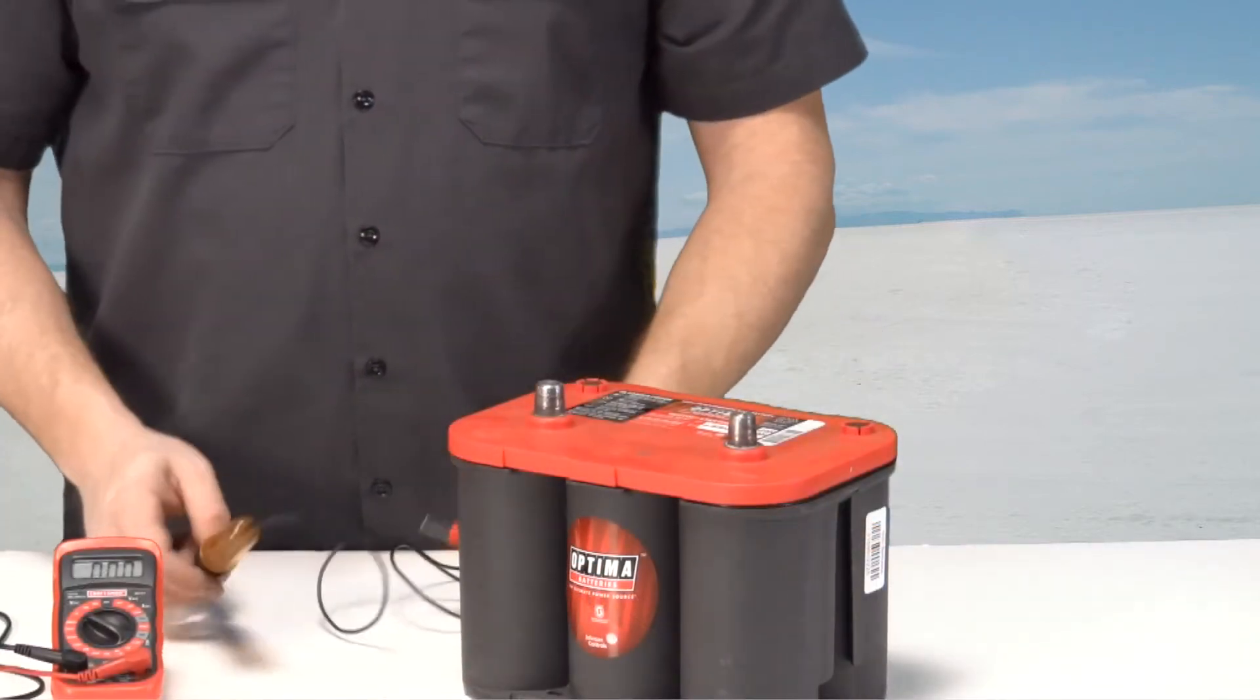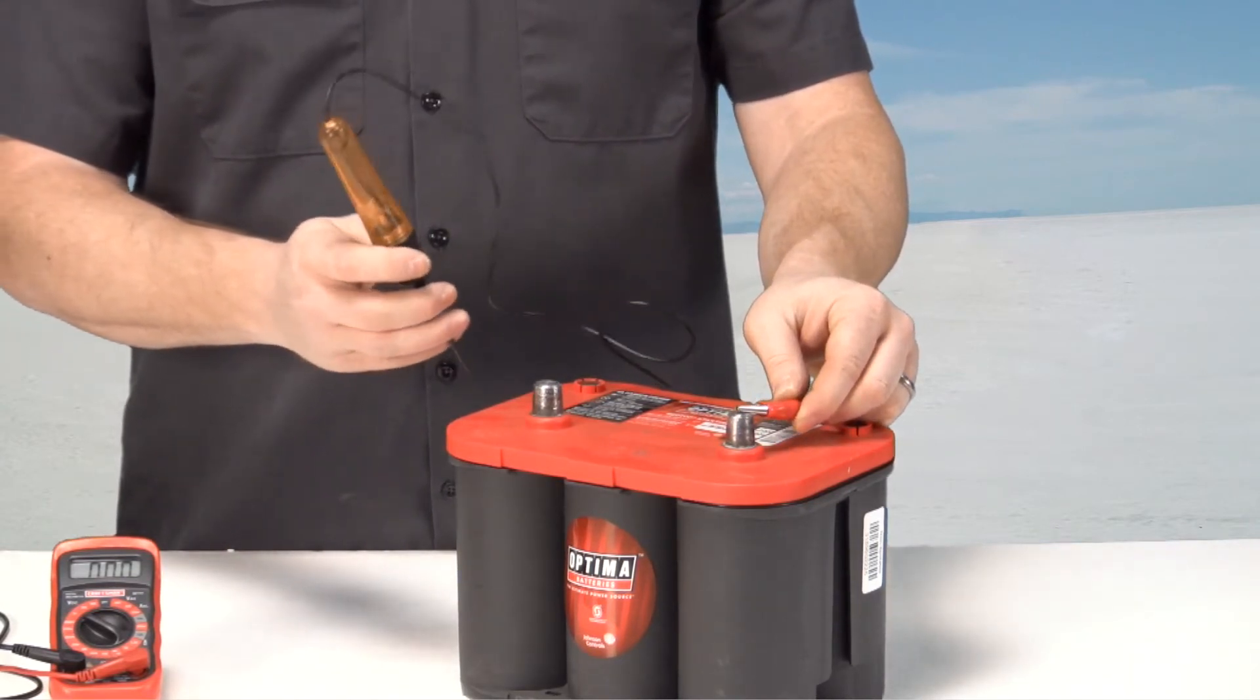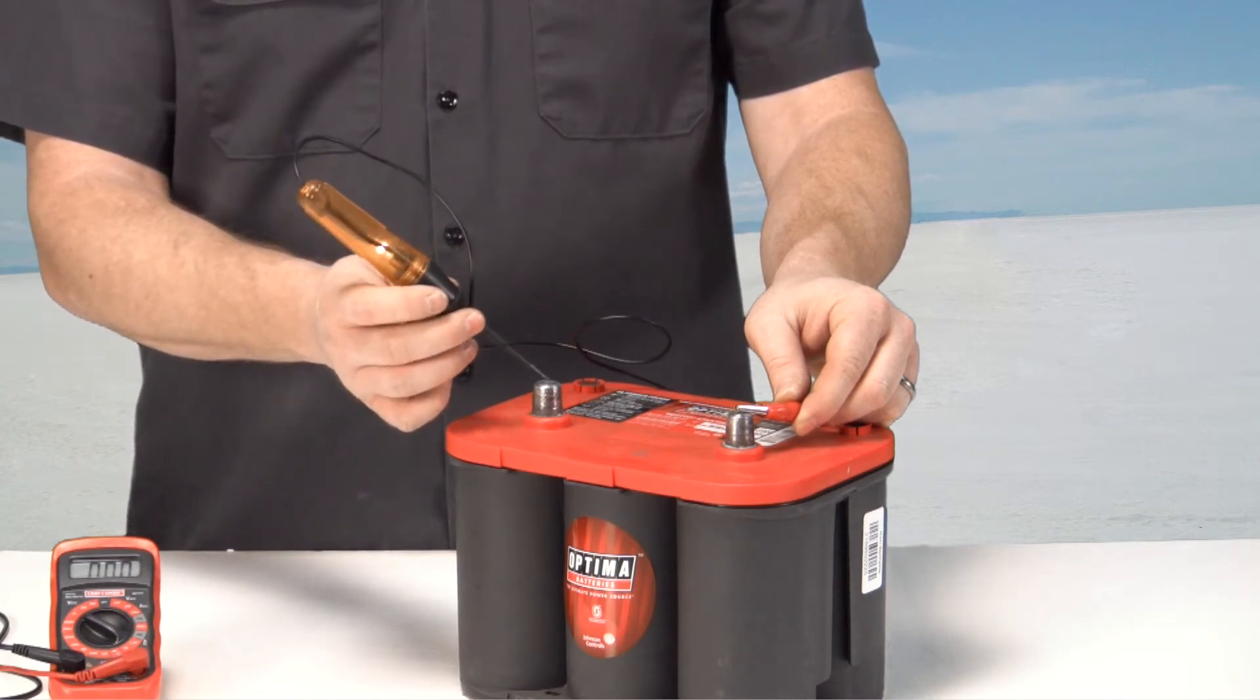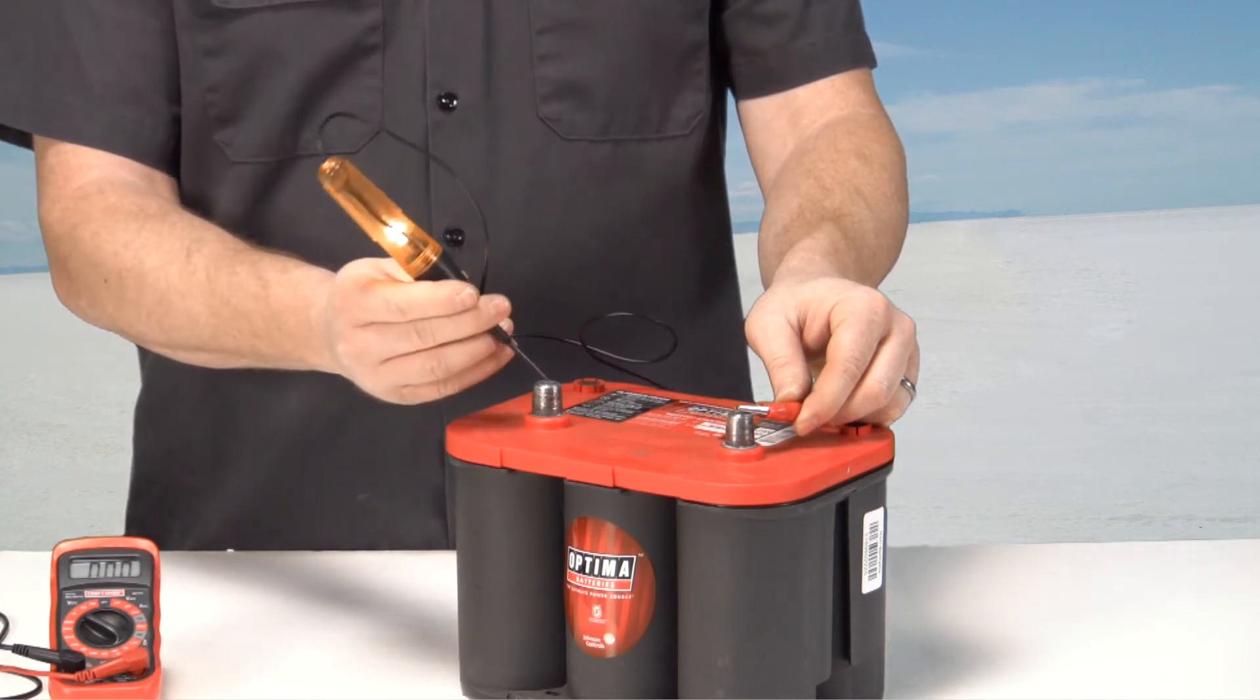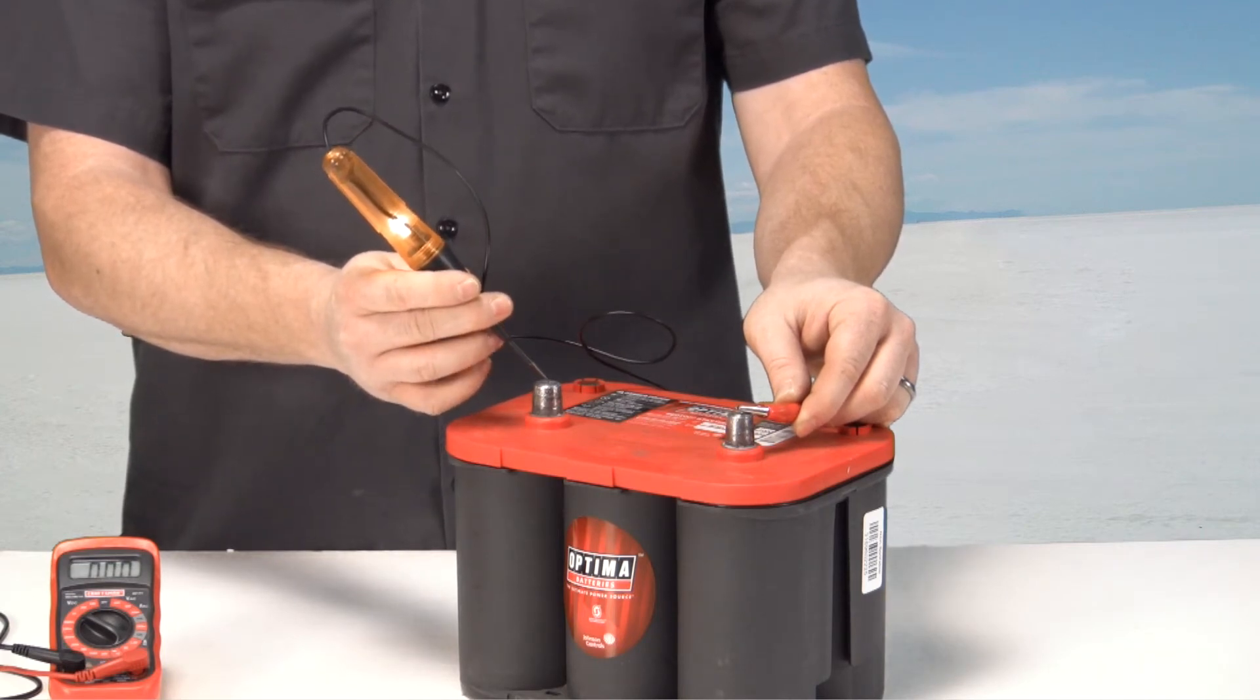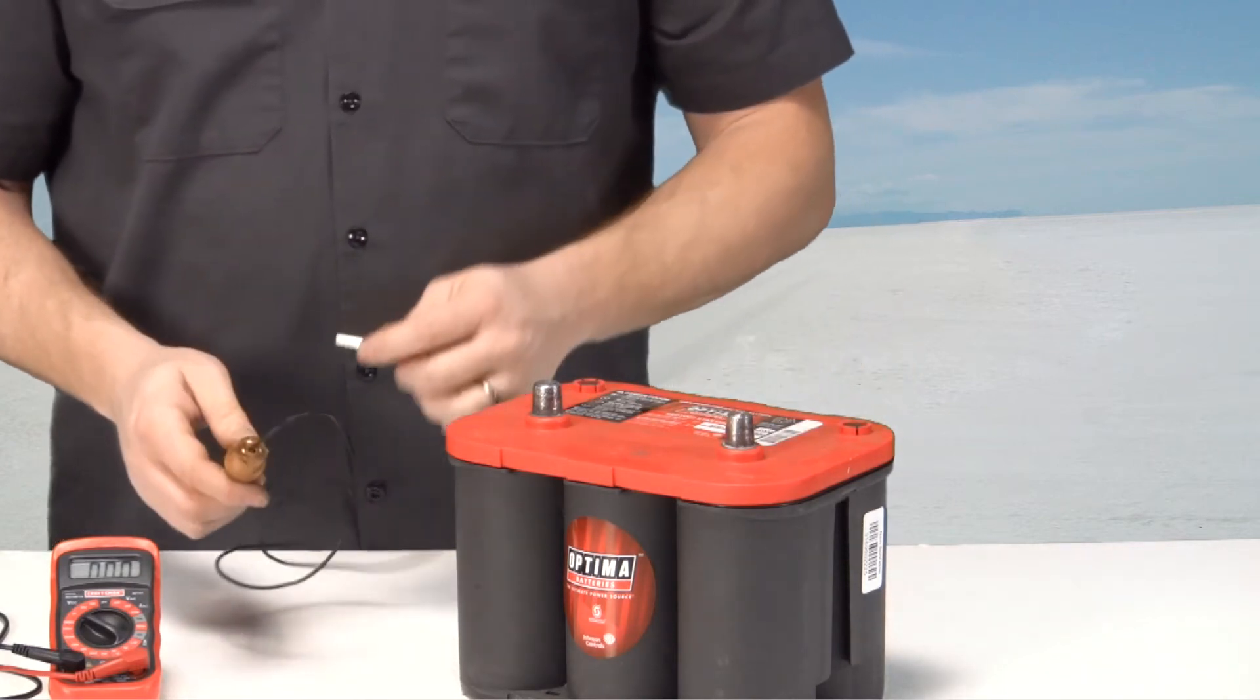For the test light, it's the same idea. You're going to ground the grounding leg on the test light right to the ground on the battery, and put the pointer probe directly to the positive side of the battery and make sure you get a nice bright light. This will let you know that the bulb inside the light isn't burnt out and that you'll have a nice enough charge on the battery to continue testing.